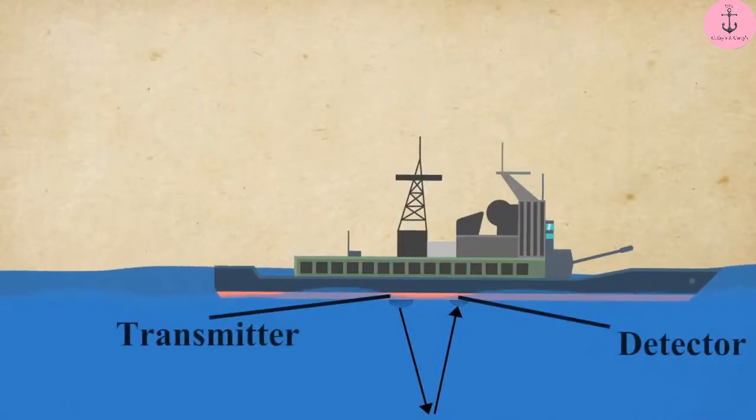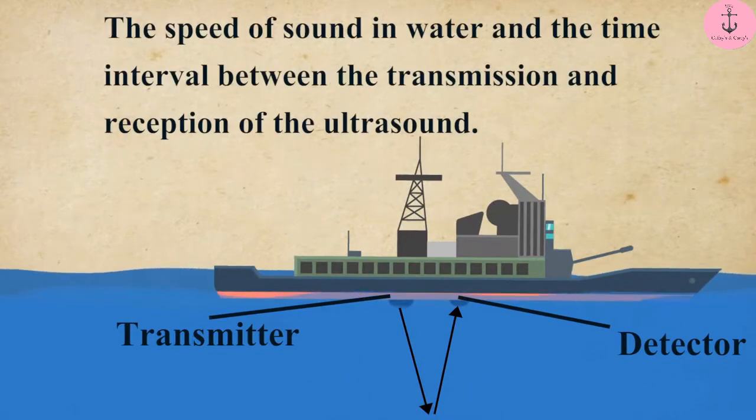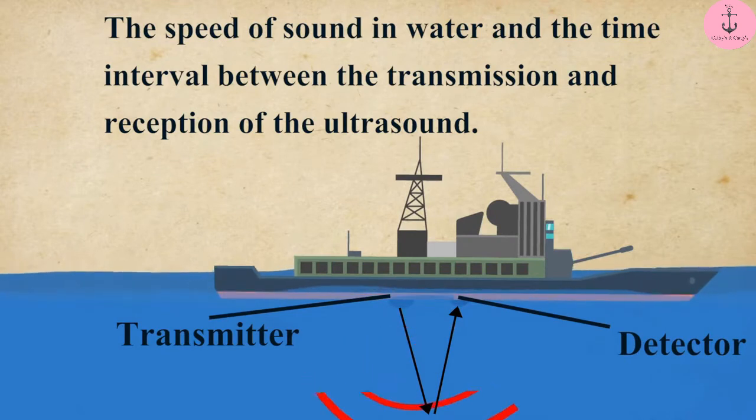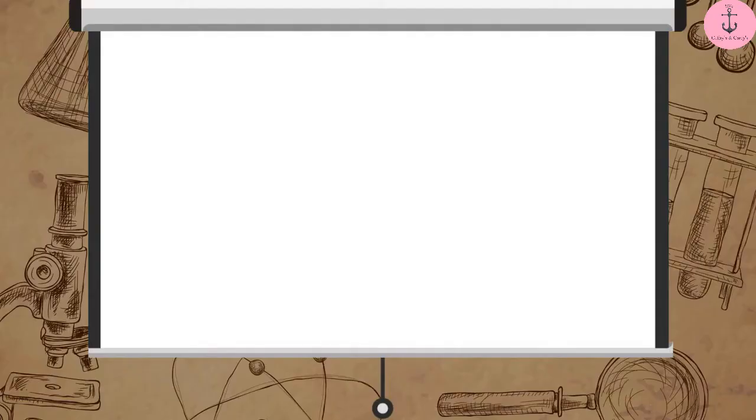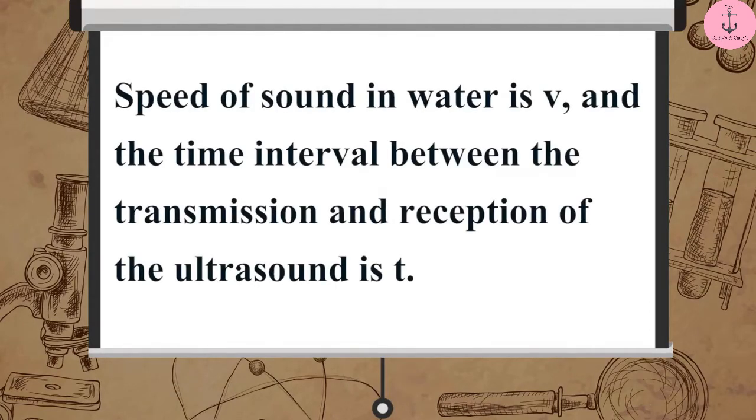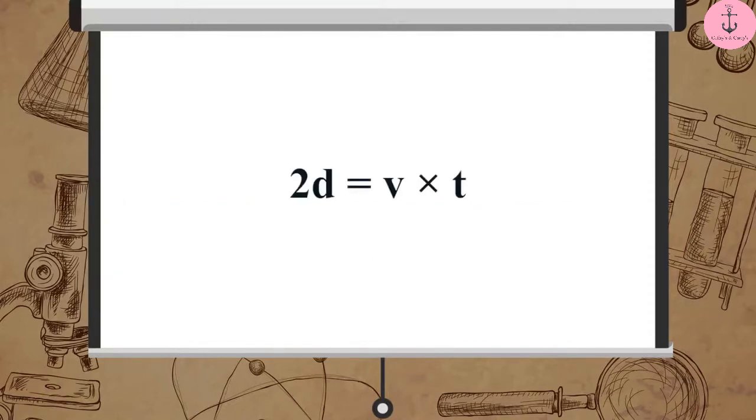The distance of the object that reflected the sound wave can be calculated by knowing the speed of sound in water. Suppose the speed of sound in water is V, and the time interval between the transmission and reception of the ultrasound is T. Then, the distance 2D travelled by the ultrasound can be written as 2D is equal to V multiplied by T.